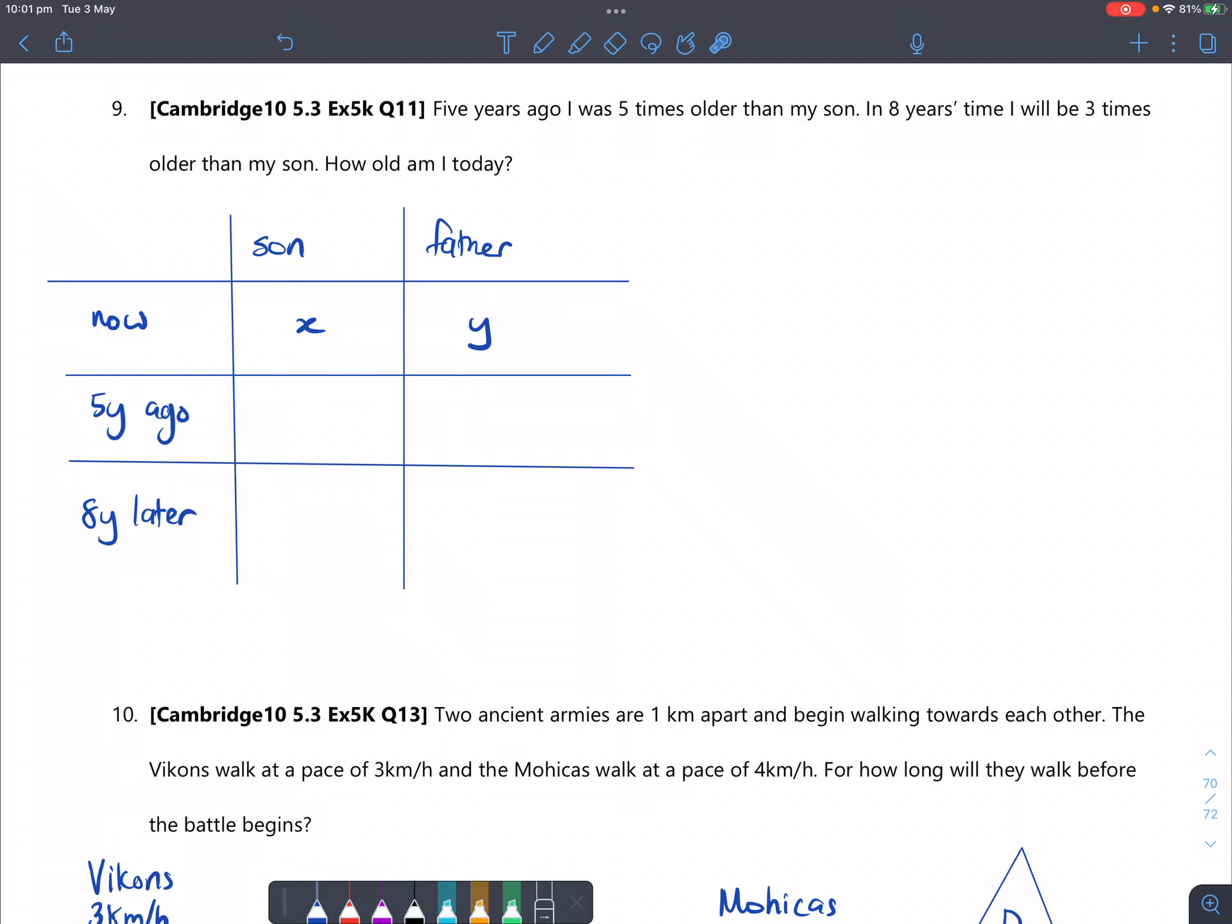Now, if we analyze this sentence here, five years ago I was five times older than my son. So five years ago the son would have been five years less, which is x minus 5, but he is five times older than the son. So if his son is this age, then the father will be five times older, which is 5 times x minus 5.